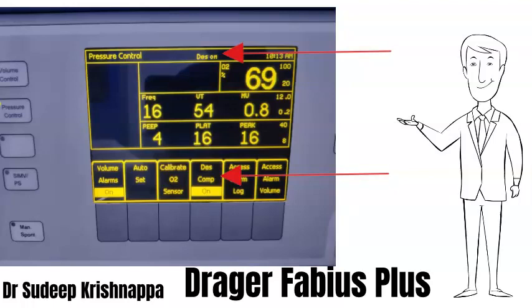Whenever these machines are using desflurane, they have an option of switching on desflurane compensation, which can be chosen from the menu as indicated by the lower arrow. When you switch on desflurane compensation, a symbol at the top of the screen indicates that desflurane compensation is indeed switched on.